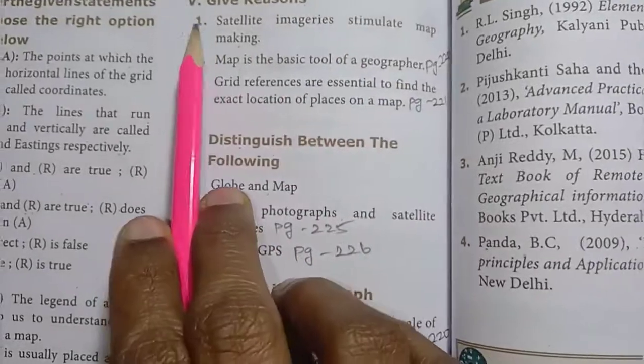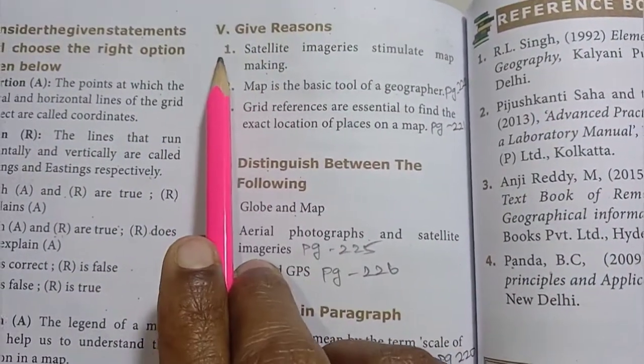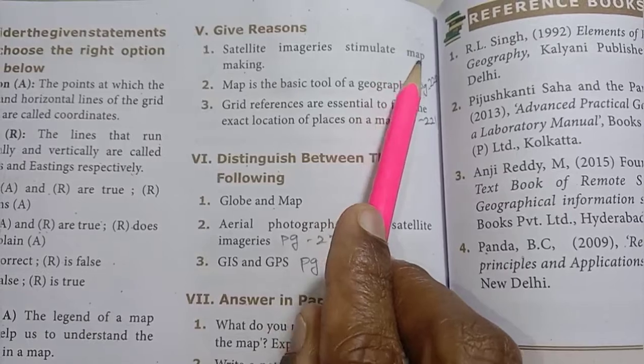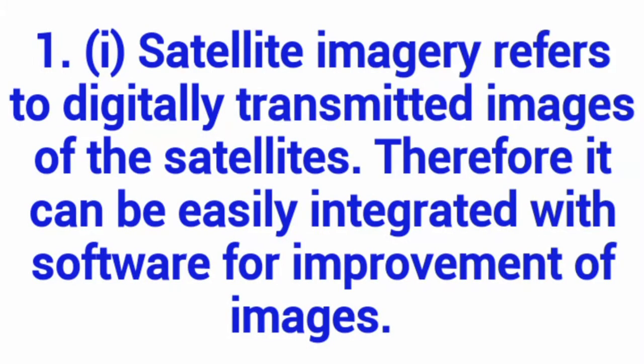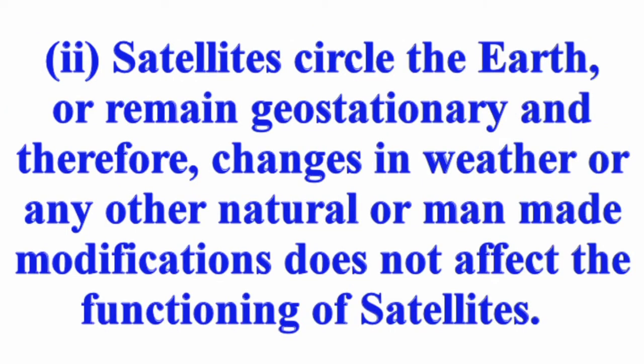Then move on to give reasons. Roman numeral five. First one, satellite imagery stimulate map making. Answer, two points. First point: satellite imagery refers to digitally transmitted images of the satellites. Therefore, it can be easily integrated with software for improvement of images. Second point: satellites circle the earth or remain geostationary and therefore changes in weather or any other natural or manmade modifications does not affect the functioning of satellites.